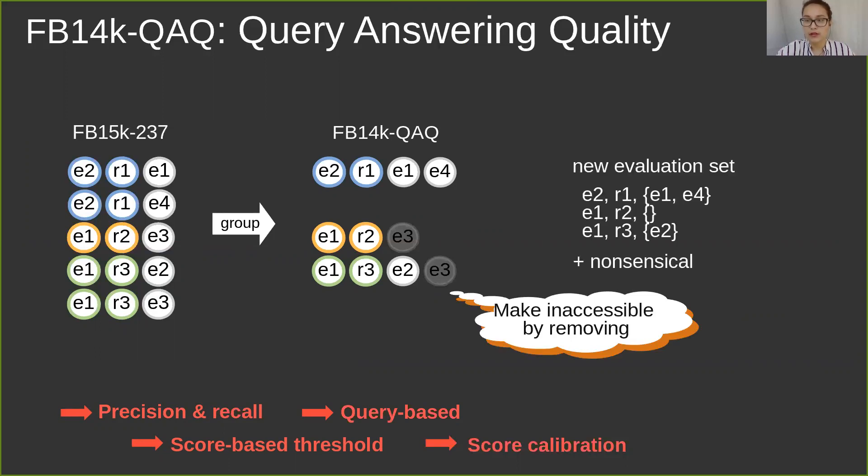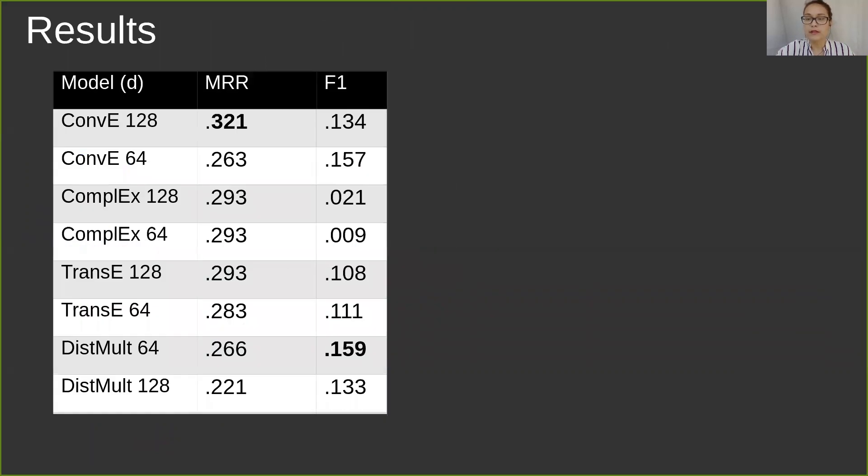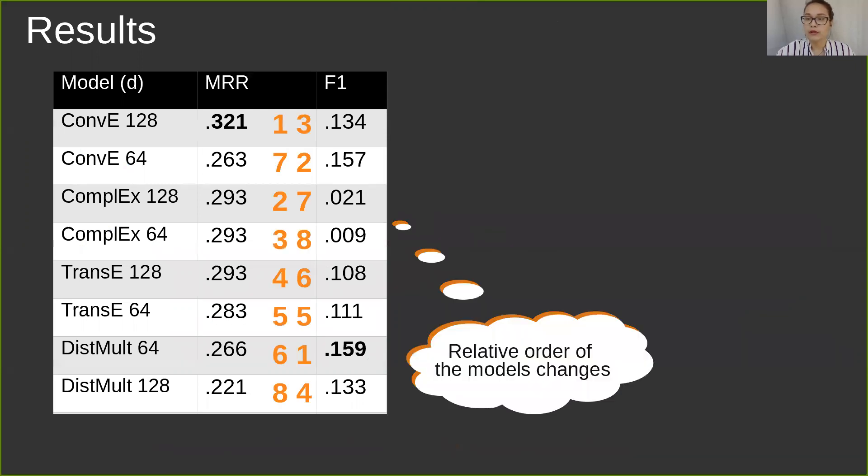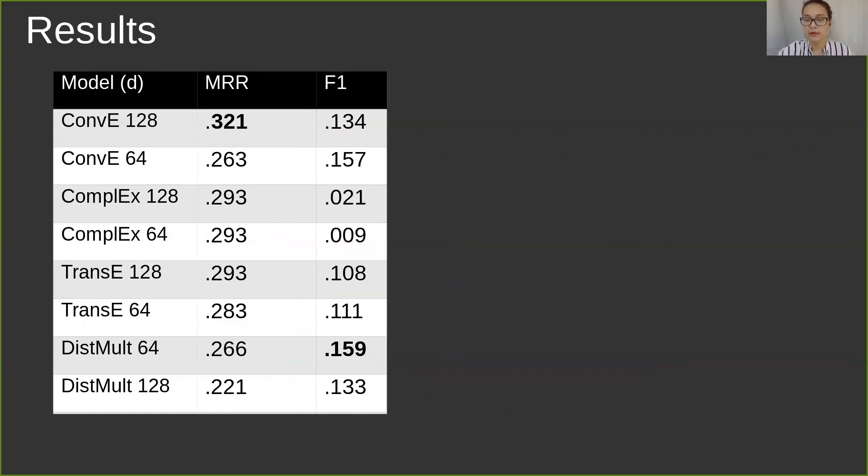The results confirmed our hypothesis that the actual classification quality cannot be reflected by the mean reciprocal rank. Model ranking changes strongly. The ComplEx model shows the most extreme change from the top of the rank to the bottom of the F1 score performance. We observed an interesting tendency on the different query types among all models. While queries with inaccessible answers are the hardest to crack, nonsensical queries also pose a problem and are not trivial to classify correctly.